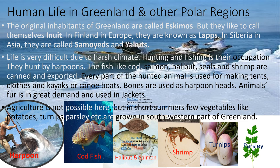Every part of the hunted animal is used for making tents, clothes, and kayaks or canoes. Bones are used as harpoon heads. Animals' fur is in great demand and used in jackets. Agriculture is not possible here, but in short summers, a few vegetables like potatoes, turnips, parsley, etc. are grown in the southwestern part of Greenland.